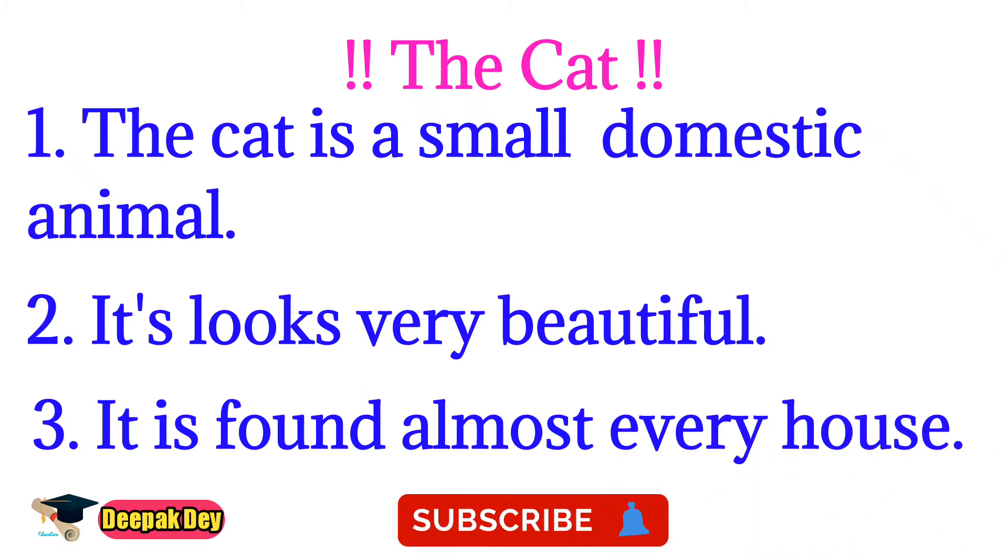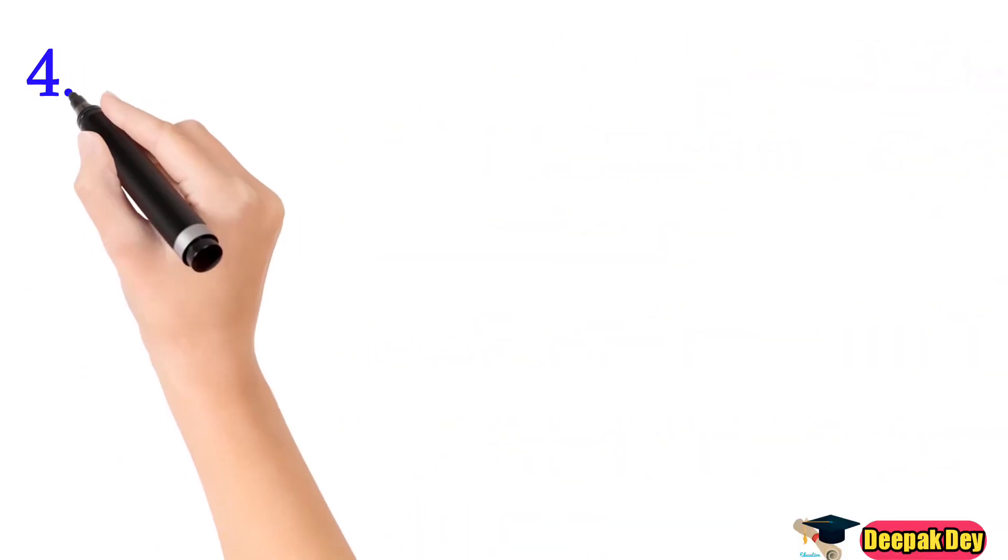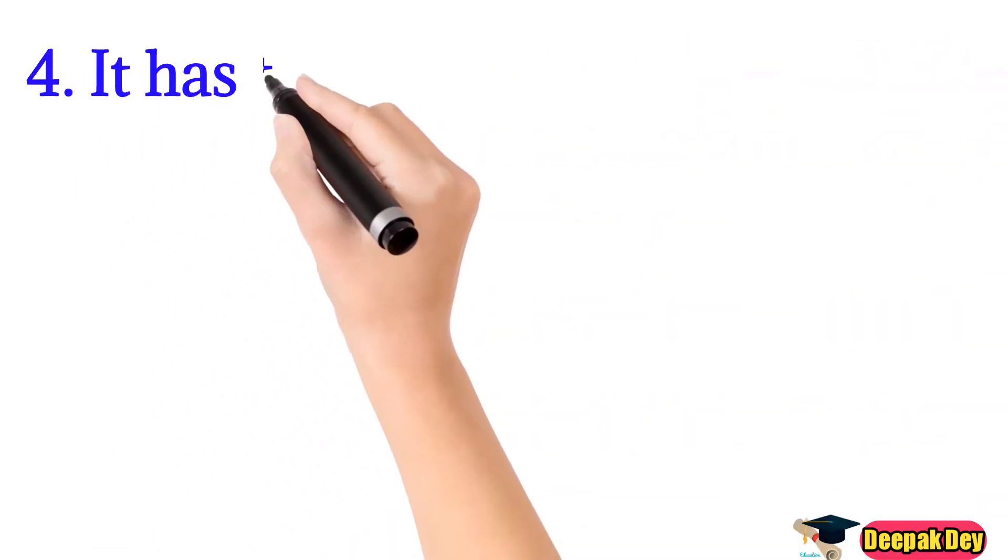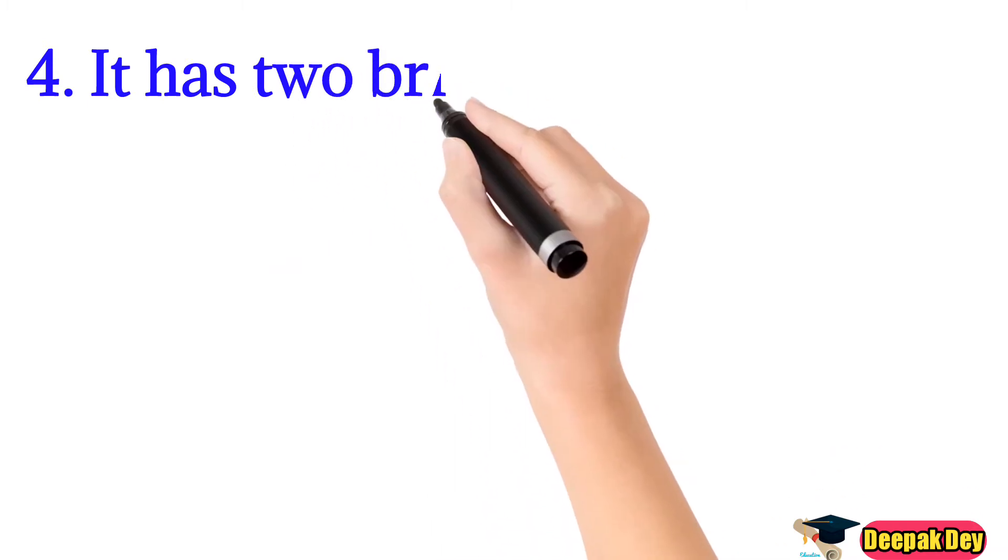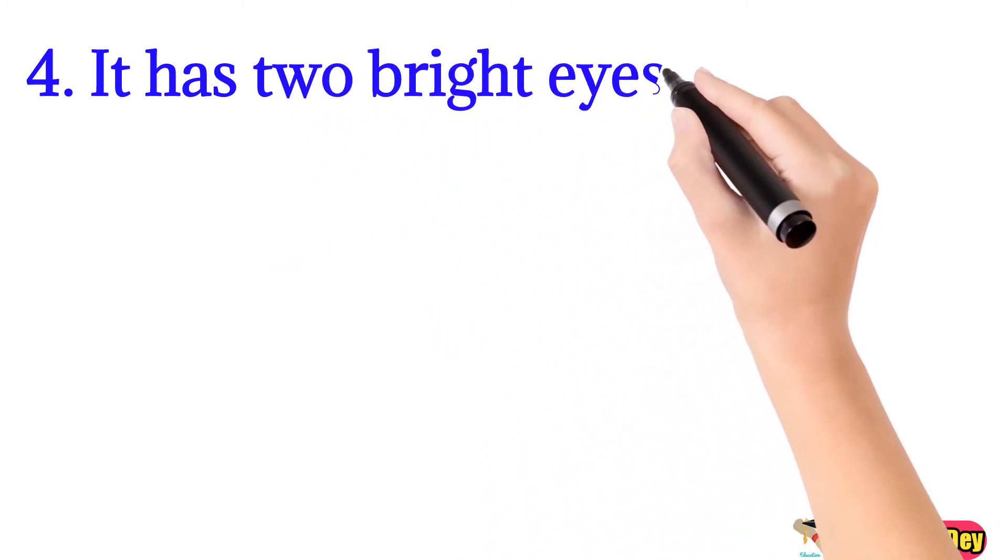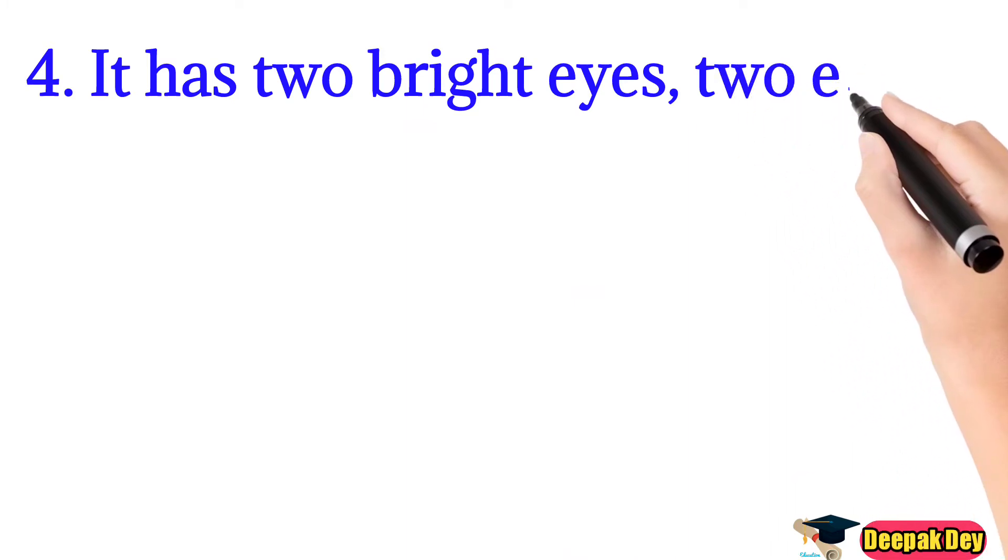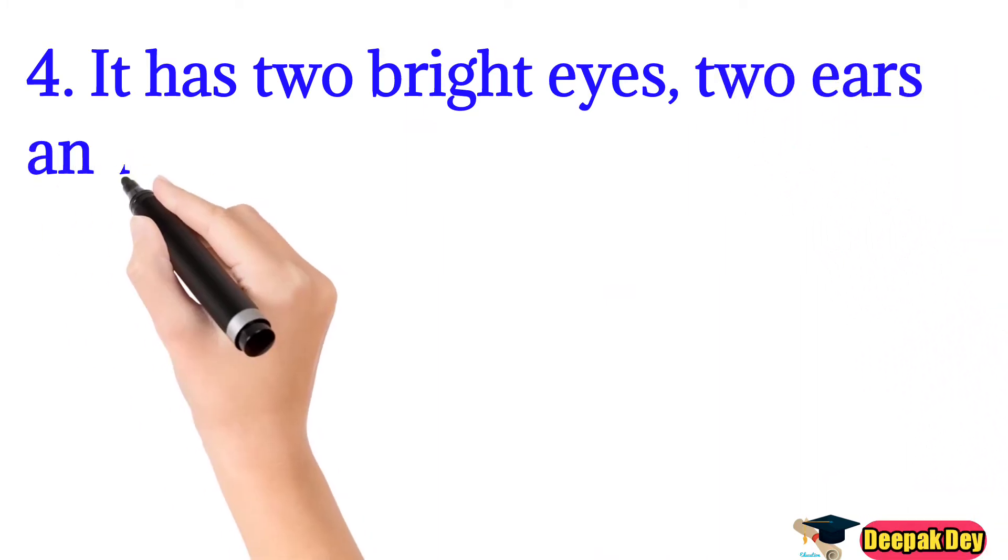Line number 4. It has two bright eyes, two ears and a small tail.